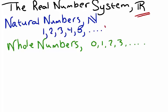So the natural numbers are our counting numbers, and the whole numbers are the natural numbers plus zero.